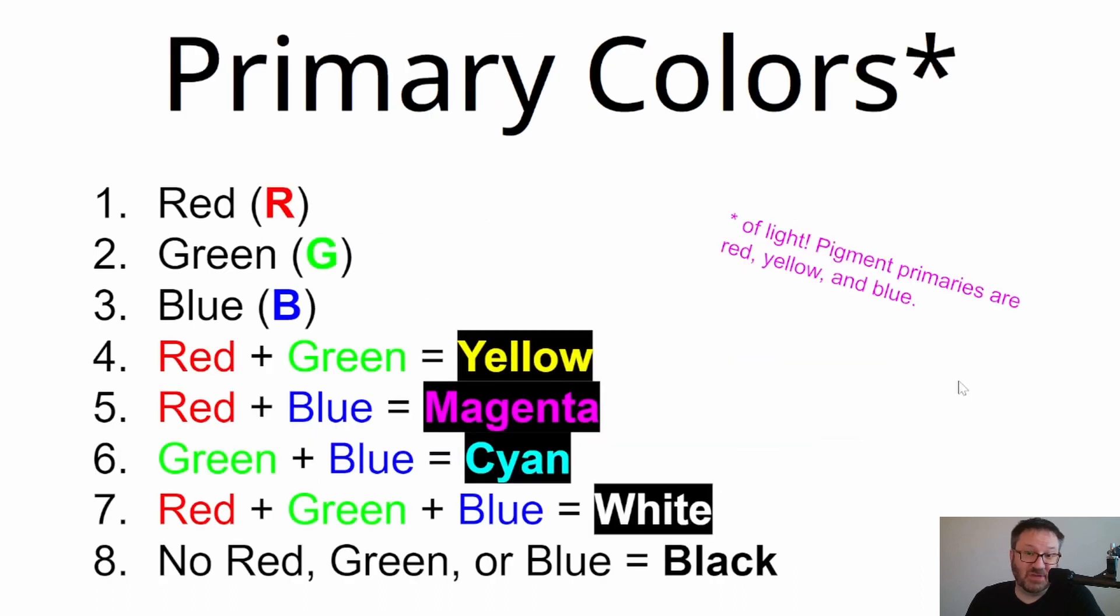Before we get into that, it's important to cover primary colors. If you've done any pigment-based artistic work with paints, crayons, things like that, you'll be familiar with red, yellow, and blue as the primary colors, but that's not how it works for light. With digital images on your computer or your phone, we have to look at the primary colors of light, and they're different than the primary colors of pigment. With light, the primaries are red, green, and blue, often referred to in that order—so we have an RGB color system. If you look in this list, you'll see that red plus green will give you yellow, red plus blue will give you magenta.